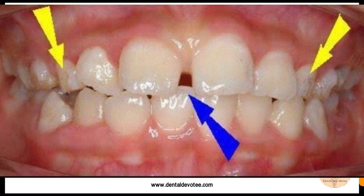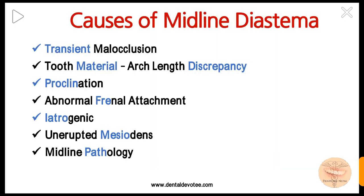Similarly, tooth material arc length discrepancy: sometimes the jaws are large and the total tooth material is relatively less, because of fewer teeth present or due to presence of small-sized teeth. This results in spacing between teeth, and that spacing may be present between the incisors, causing midline diastema.